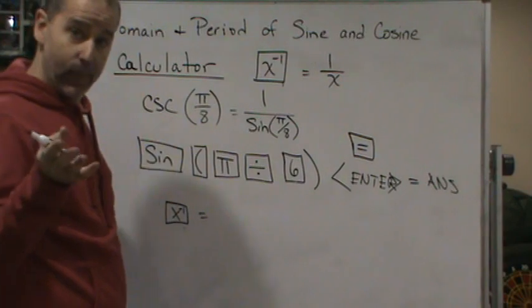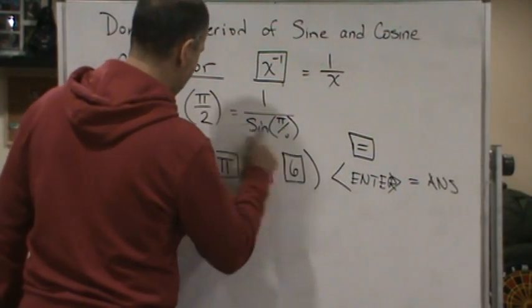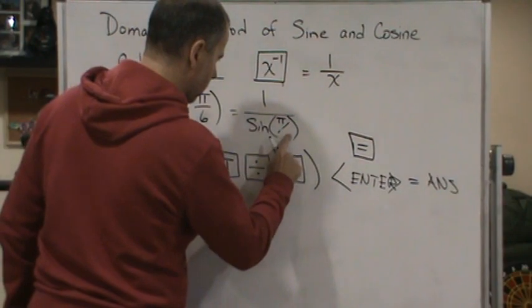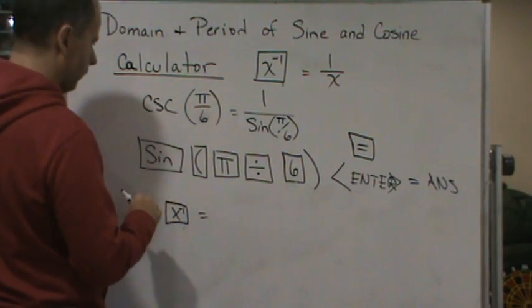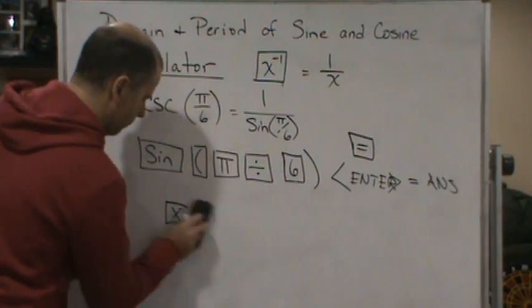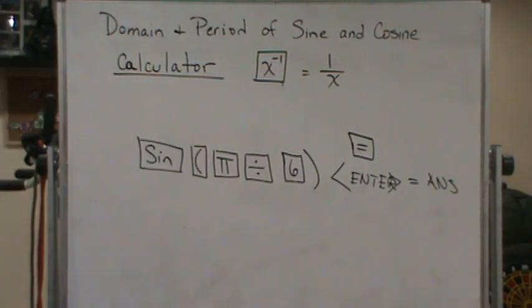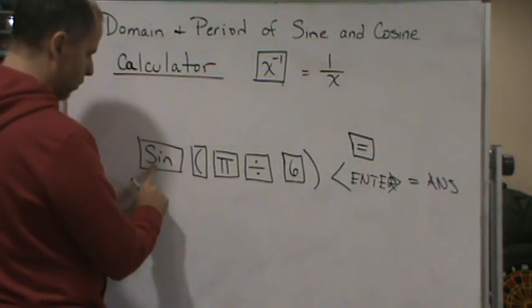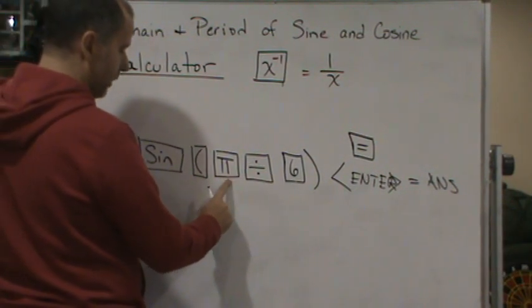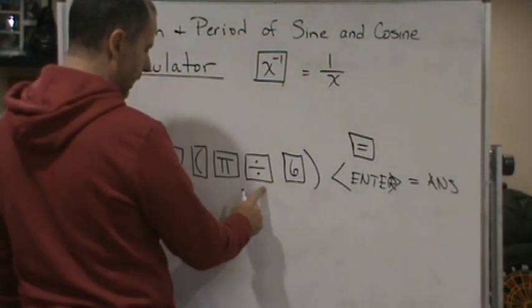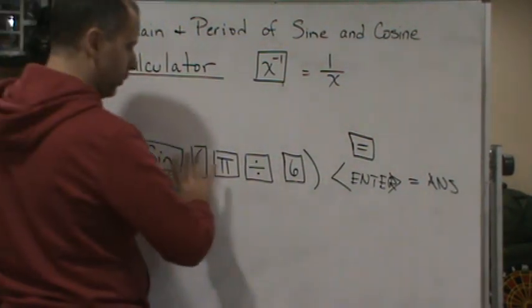If you do this, and again, just to check your math to make sure you're doing it correctly, we want to make sure we put the sine, hit the sine button, then open parenthesis if it's not there, and then the pi key, followed by the division key, followed by the 6 key, followed by the end parenthesis key. Make sure you do it in that order.